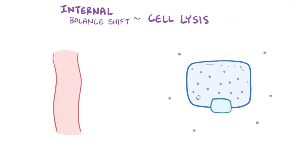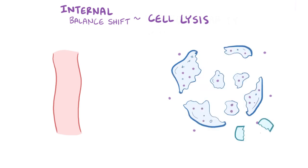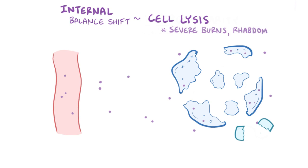Cell lysis is yet another cause of hyperkalemia. Since so much potassium is kept within the cell, when a large number of cells die or lyse, potassium is released into the blood, causing hyperkalemia. Examples of large-scale cell lysis include severe burns, rhabdomyolysis — or breakdown of skeletal muscle — and tumor lysis as a result of chemotherapy.